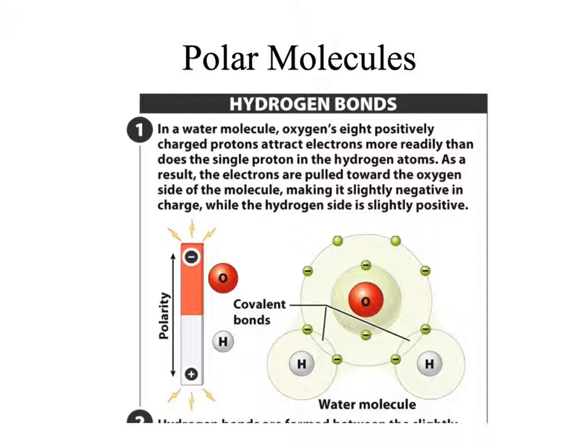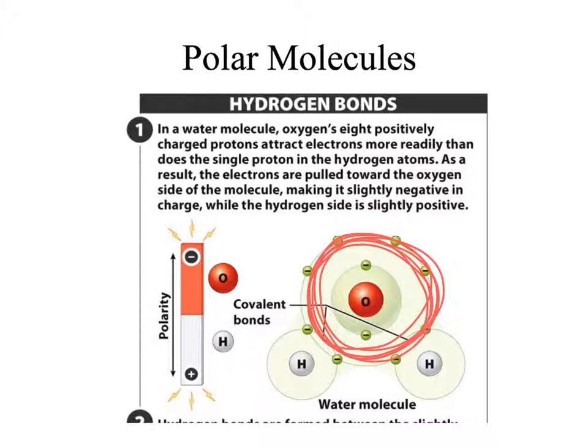A good example of a polar covalent bond is between oxygen and hydrogen in a water molecule. Oxygen is much larger than hydrogen and has more protons in its nucleus. This means that it is more electronegative than the hydrogen atoms. Because oxygen is more electronegative, the electrons will spend more time orbiting the nucleus of the oxygen than it will the hydrogen.